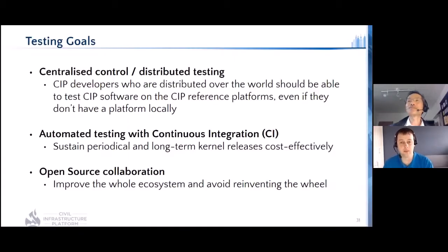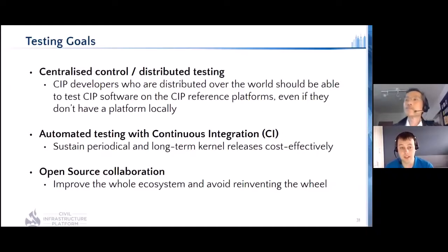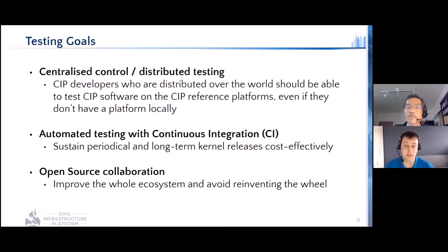To start with, I'd like to go over the testing goals from this working group. We're aiming towards having centralized and distributed testing. CIP is a global project with developers spread around the world — not everyone has access to all the different CIP reference platforms, so we want to host them all in a centralized way so anyone can access them whenever needed. We also need to run our tests automatically, because manual testing over 10 plus years would be hugely costly. We're also very interested in open source collaboration — working with other projects rather than reinventing the wheel.